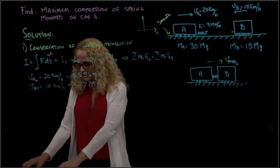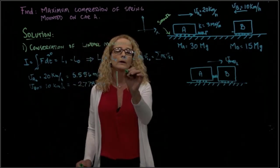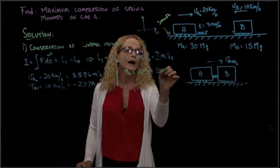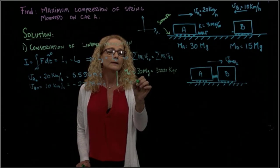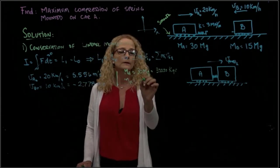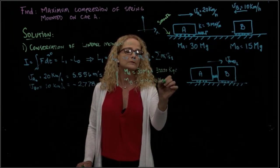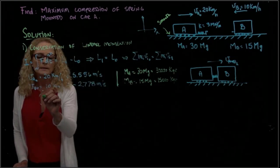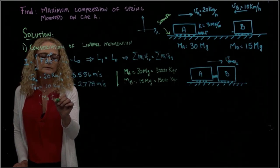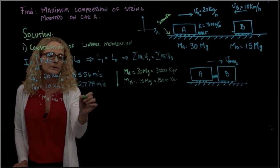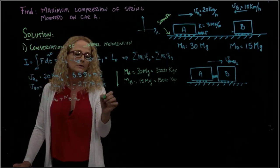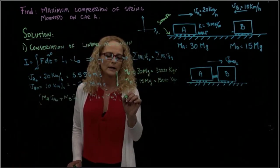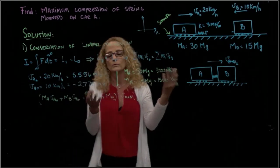We also need the masses in proper units. Mass A is 30 megagrams, which is 30,000 kilograms. Mass B is 15 megagrams, which is 15,000 kilograms. Setting up the conservation of momentum equation: mass A times V_A0 plus mass B times V_B0 equals mass A plus mass B, all together, times the final velocity V_(A+B) at position 1.